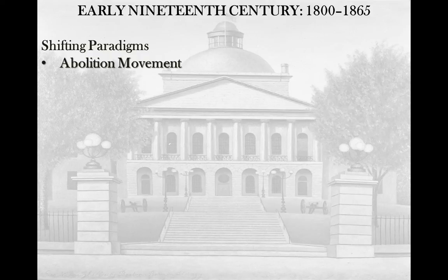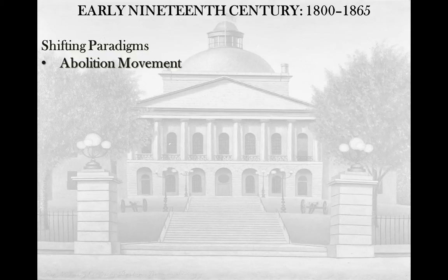The Constitution really played around with this. They created the three-fifths law, which said all slaves were only considered three-fifths of a person as it relates to the count of the population with regards to voting, but they themselves had no rights essentially. There's also another clause within the Constitution that identifies that the slave trade will end — that you can no longer have an active slave trade.